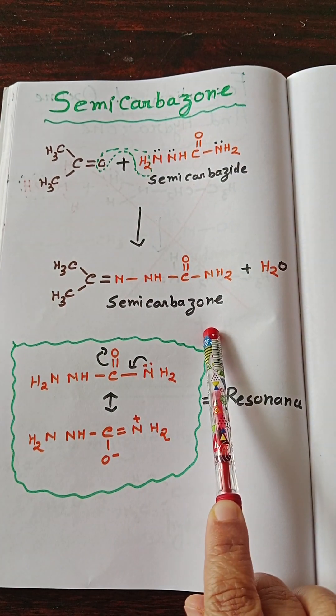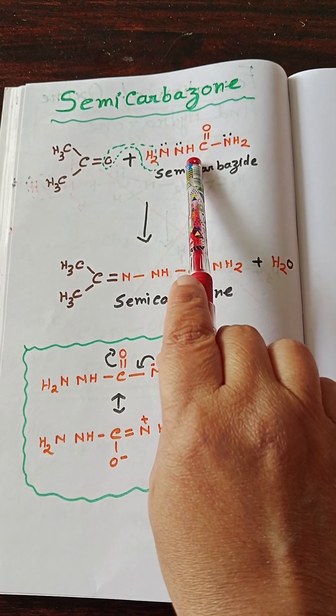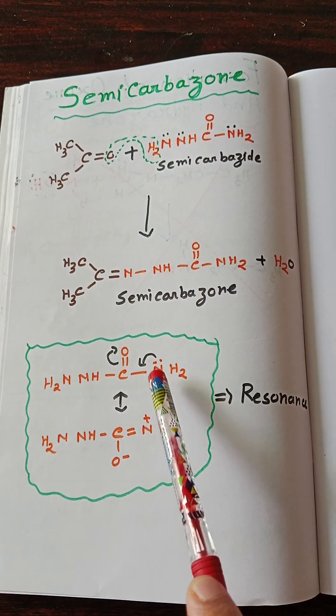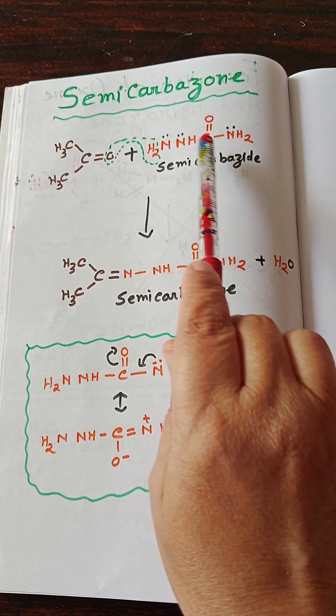In semicarbazide, the NH2 that is directly attached with the C=O group has its lone pair not available for donation. But the NH2 which is not directly attached with the C=O group is available for donation to the carbonyl carbon.